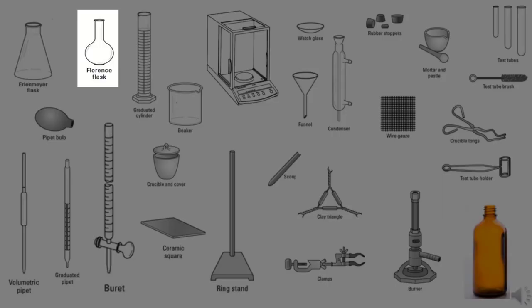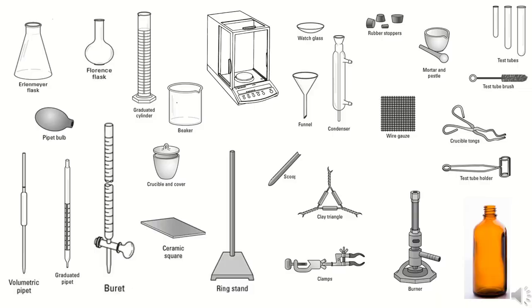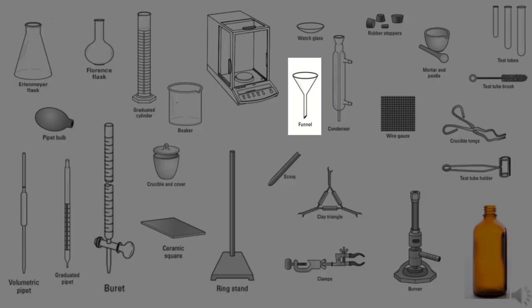Florence flask, a type of flask, generally round bottom, usually suspended and heated from below. Its shape makes it easy to swirl and mix liquids inside of it. Funnel, used together with a filter paper to filter precipitates out of solution. Graduated cylinder, used to precisely measure volumes.